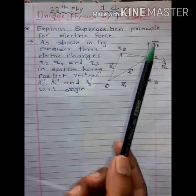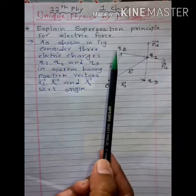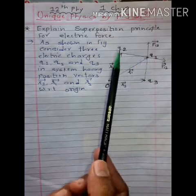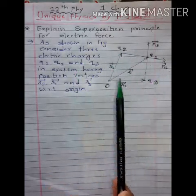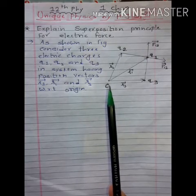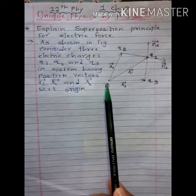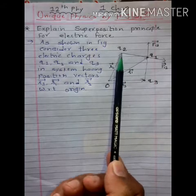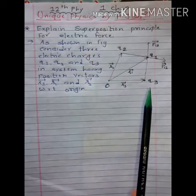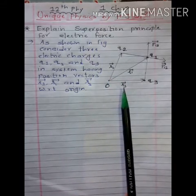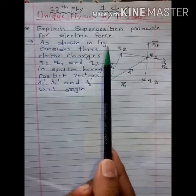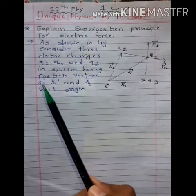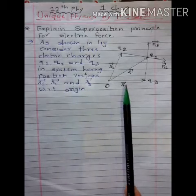First of all we consider the simplest system. We have three charges Q1, Q2 and Q3. This is our origin. We consider the position vector of these three charges: position vector of Q1 is denoted by vector R1, position vector of Q2 is denoted by vector R2, and position vector of Q3 is denoted by vector R3, all with respect to the origin.